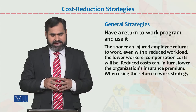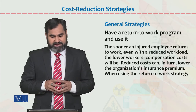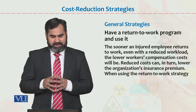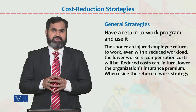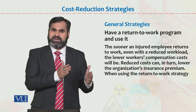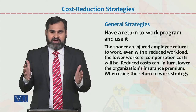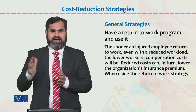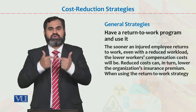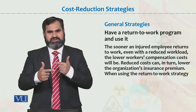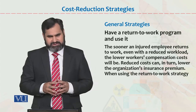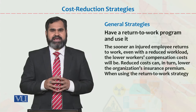Have a return to work program and use it. The sooner an injured employee returns to work, even with a reduced workload, the lower the workers' compensation costs will be. Reduced costs can in turn lower the organization's insurance premium. The goal is to bring the injured employee back to the workplace and gradually give them work — starting at 10%, 20%, 30%, 40% of their previous workload, until within 1–3 months they become fully integrated into the system and work at full capacity.